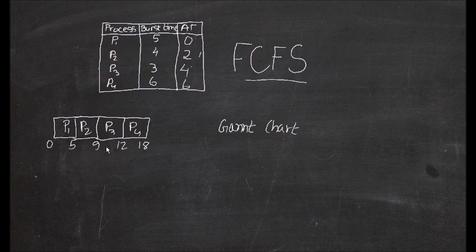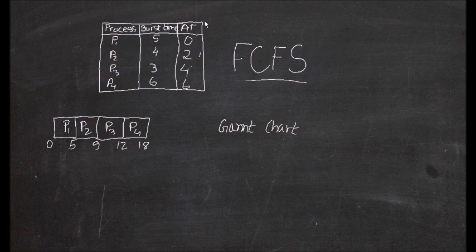So this is the Gantt chart we produced using all this information. It's really easy — the x-axis contains the burst time and these are the processes. According to FCFS, whatever process comes first we execute it first. Now let's find out the waiting time for each process.